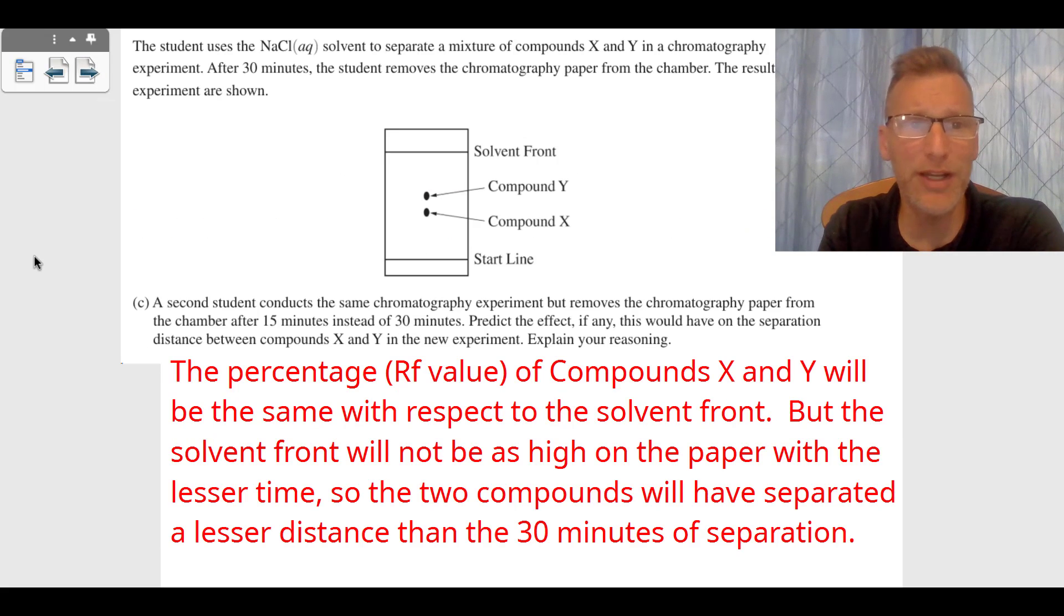The last point - they go now to using this solution as a chromatography solvent. And you can see this NaCl solution is a polar solution. It's going to separate compound Y and X. Y is a little bit more polar than X. Y has gone about maybe 60% of the way, compound X about 40% of the way, which those are the RF values.